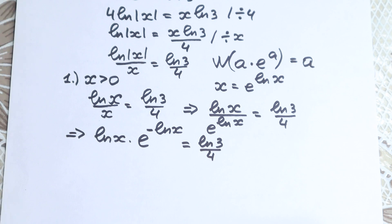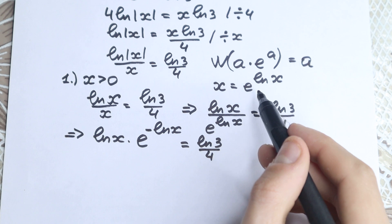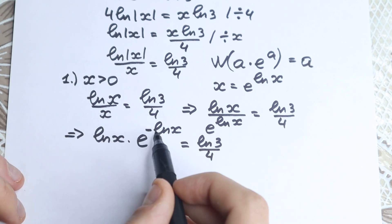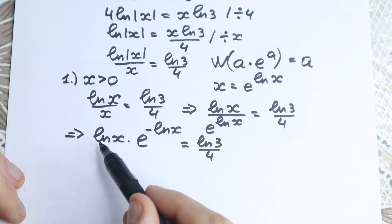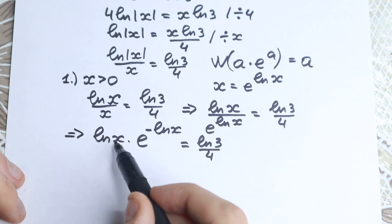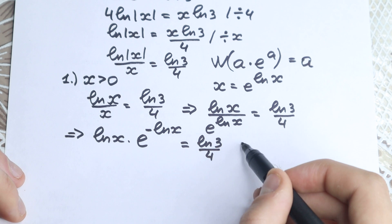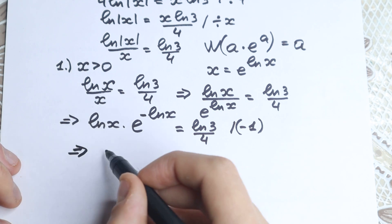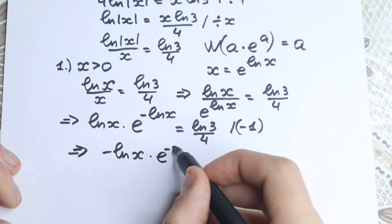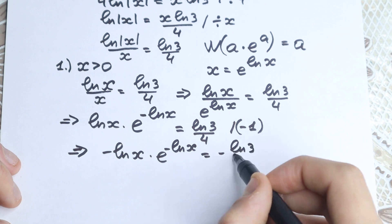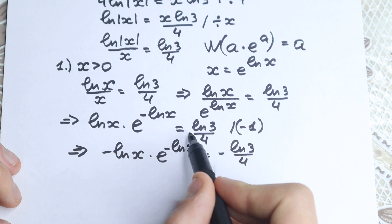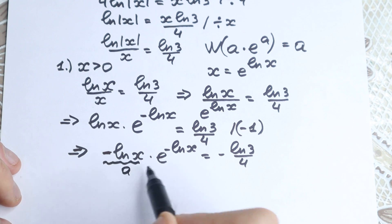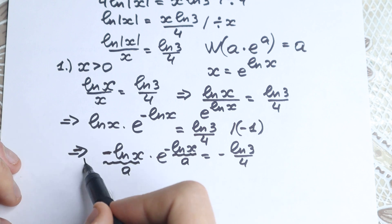Now take a look closely. We have natural log x in the first factor and minus natural log x in the exponent — these are not the same a. We need both to be the same expression. So let's multiply both sides by minus 1, which gives us: minus natural log x times e to the power minus natural log x, equal to minus natural log 3 over 4. Now both occurrences are minus natural log x — this is our a — and we can apply the Lambert W function.